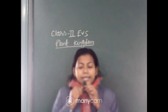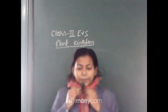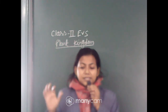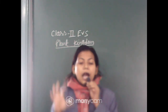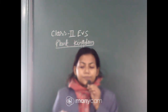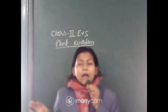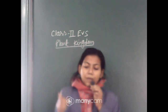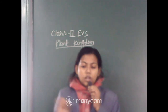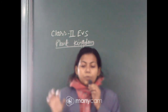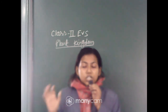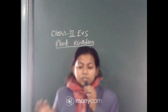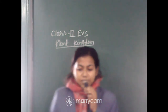We see different kinds of plants around us — some are big and some are small. Big and tall plants are called trees.